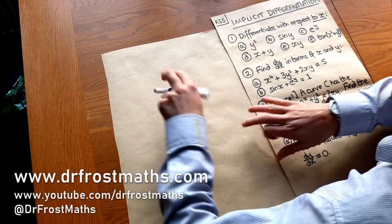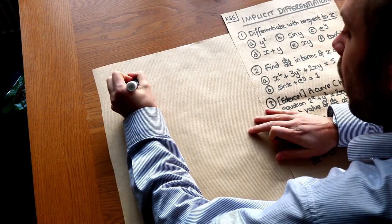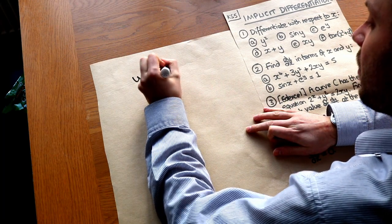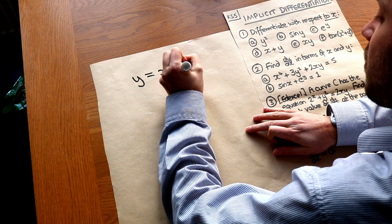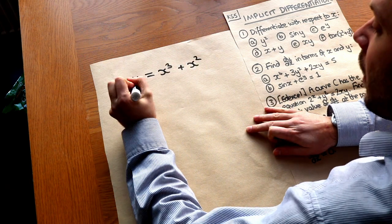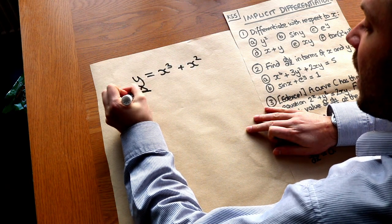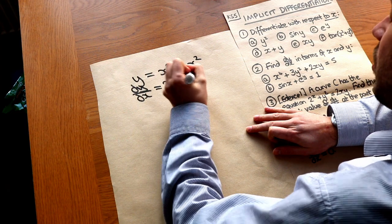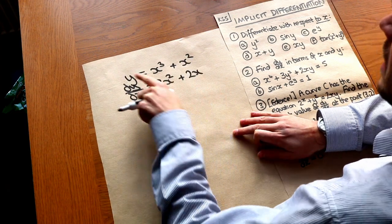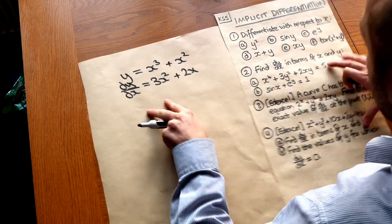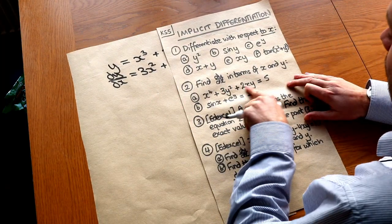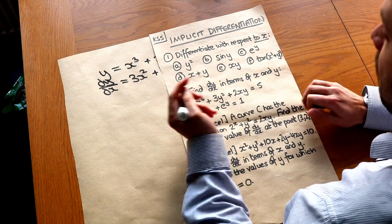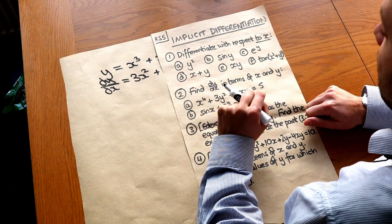Previously with differentiation you're used to having y as some function of x. So it could be, for example, x cubed plus x squared. We know that then becomes dy over dx when we differentiate and we would get 3x squared plus 2x. But what if we didn't have y in terms of x? What if we had a more complex mixture of x and y where they're kind of all mixed up together? Well, when that happens we have to use something called implicit differentiation.